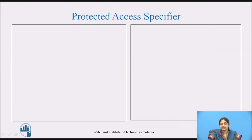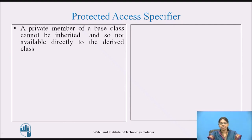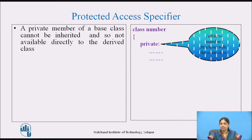Let us see the protected access specifier. We already know that a private member of a base class cannot be inherited and is not available directly to the derived class. Here it shows a class where some private members are used, and those are visible only to member functions within the same class.